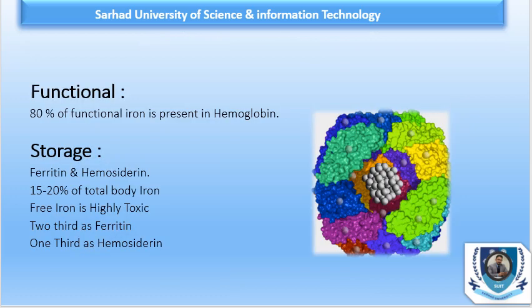Regarding iron metabolism, we can discuss where iron is stored and in which form it is stored — these are the two main compartments. Functionally, approximately 80% of the functional iron is present in hemoglobin, and the remaining functional iron is found in myoglobin and iron-containing enzymes like catalase, cytochromes, and peroxidases.